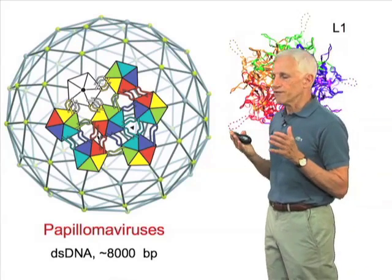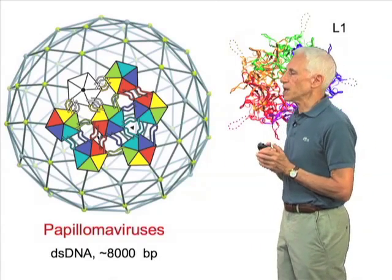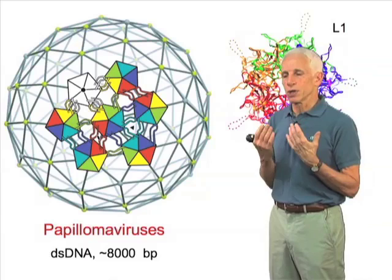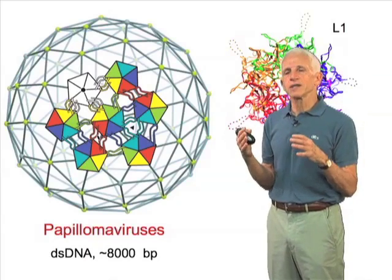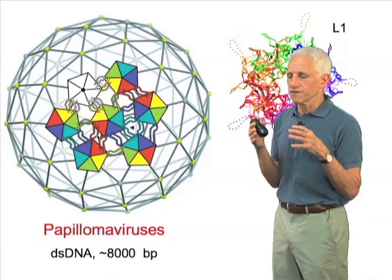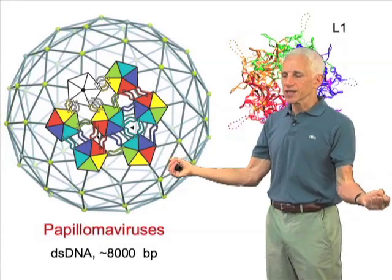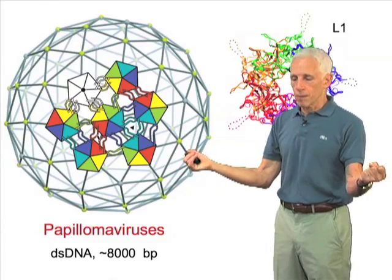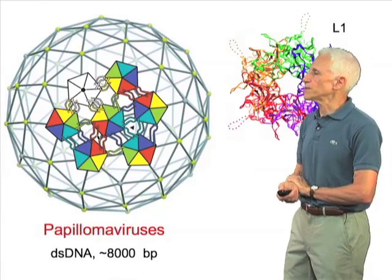This sort of assembly can nonetheless be stabilized by the same sorts of principles that we've seen in the simpler viruses, namely the tying together of rigid, or relatively rigid, building blocks by flexible, and hence potentially multi-directional arms.